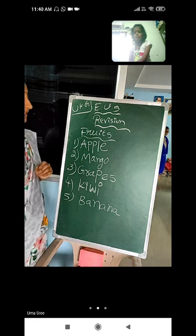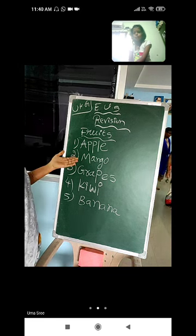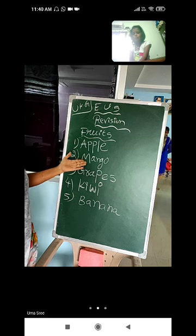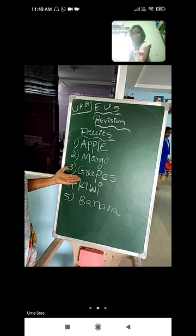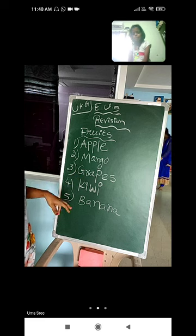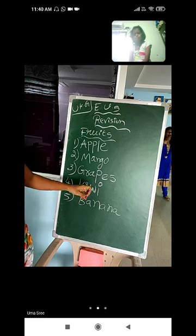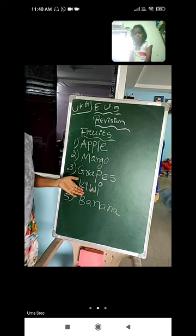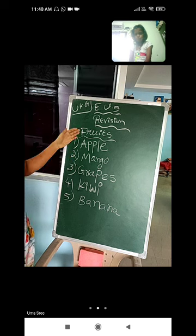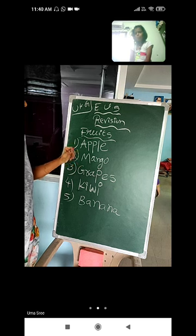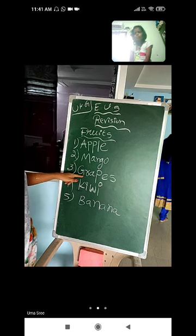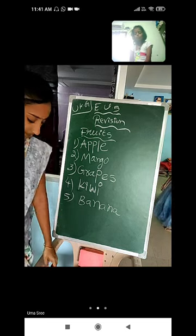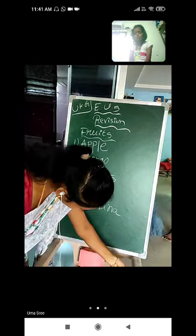Once again I repeat, listen carefully kids: first one is Apple, second one is Mango, third one is Grapes, fourth one is Kiwi, fifth one is Banana. These are all called fruits.